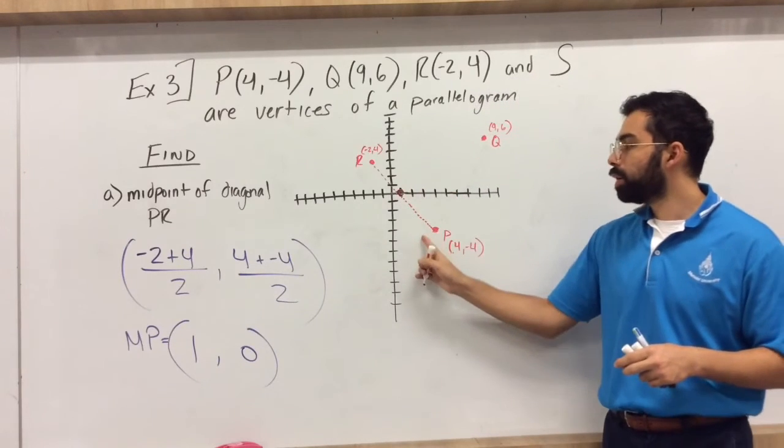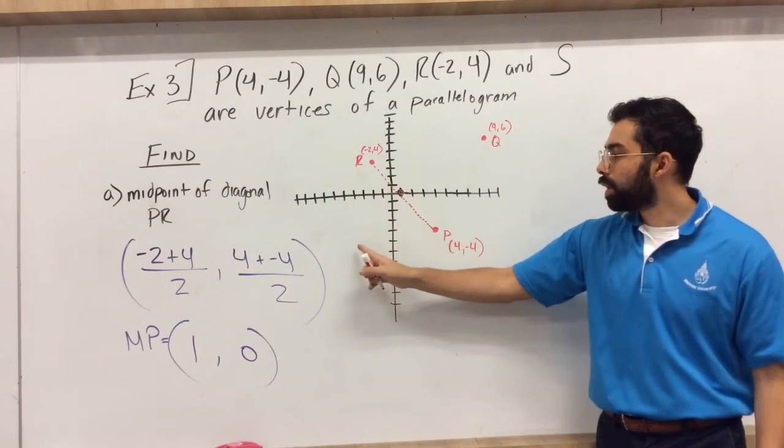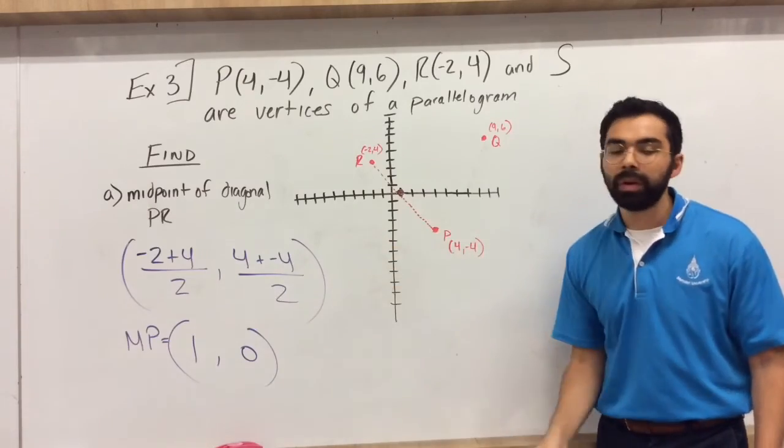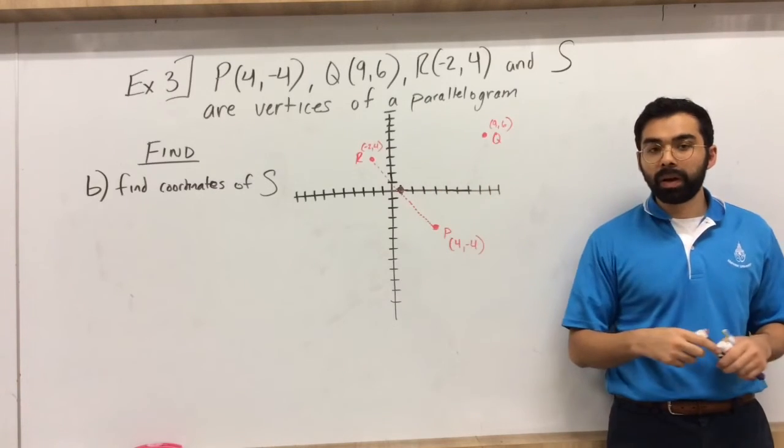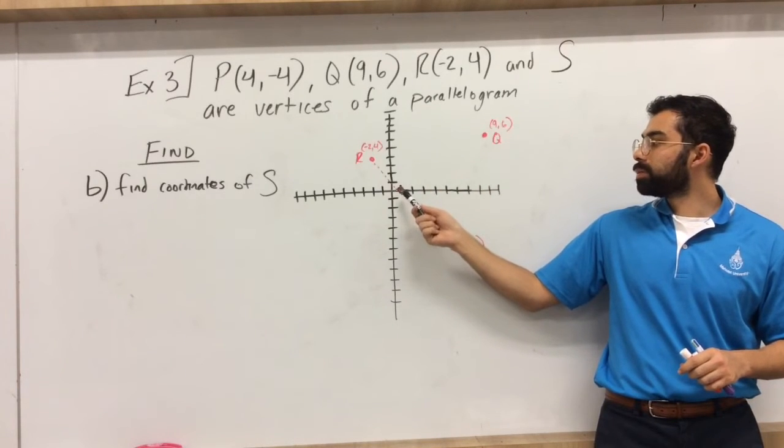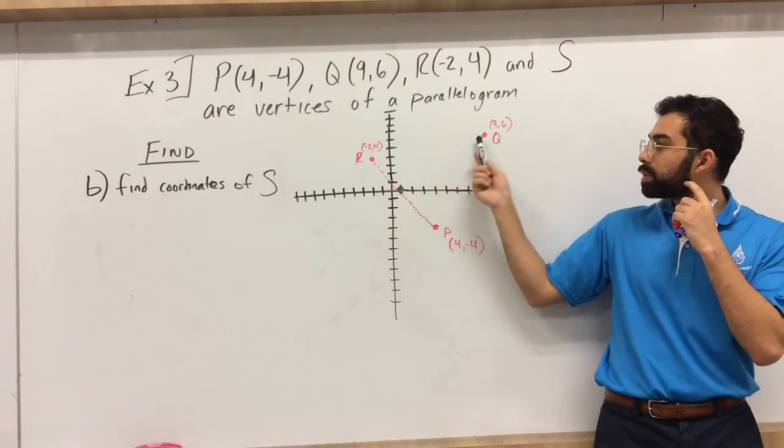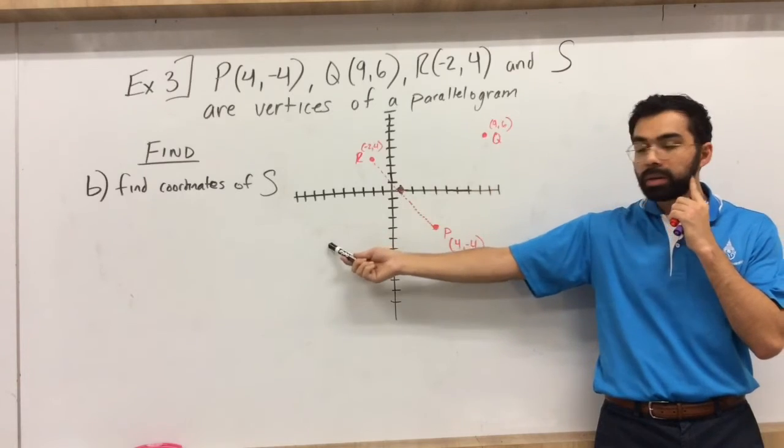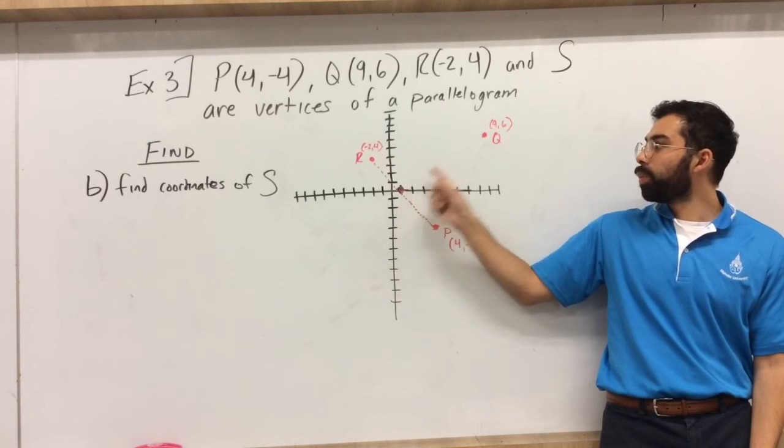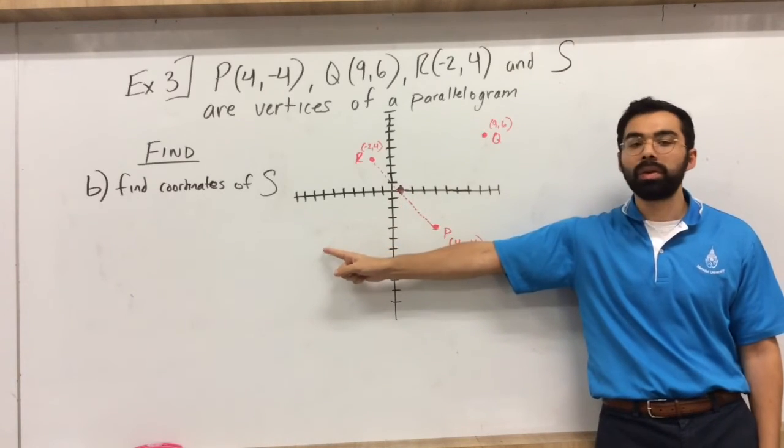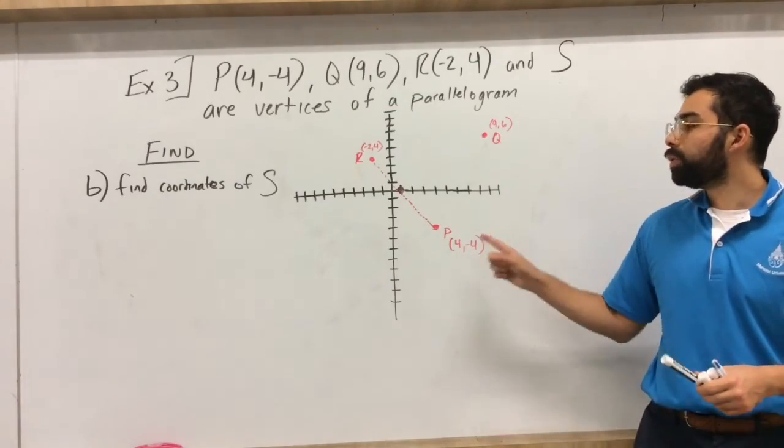Okay, so at this point again we have gotten the midpoint of diagonal PR. S would end up being right about right over here. All right, so do remember the diagonals of a parallelogram they do share a midpoint. Okay, so the midpoint of PR is 1, 0. Well guess what, the midpoint of QS is also 1, 0. So like we said earlier, if given the midpoint and an endpoint we can end up finding the other endpoint.